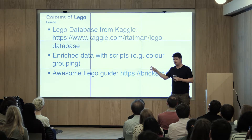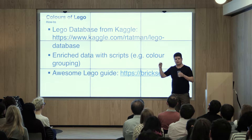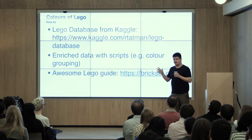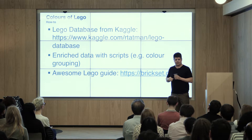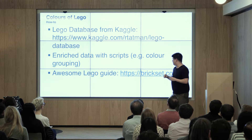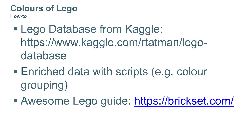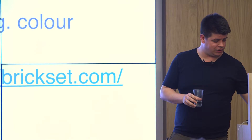I had to do some data enrichment with Python to make things simpler, because we had the RGB codes for Lego brick colors. I just grouped them using some linear algebra plus some Python scripting. Other than that, I used a web page called Bricks.com — an amazing web page. If you are interested in Lego, you can see information about any Lego set in history.